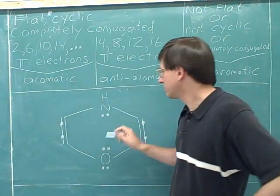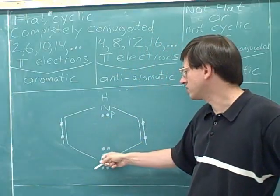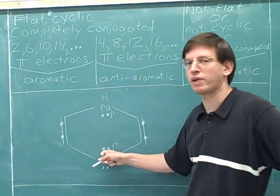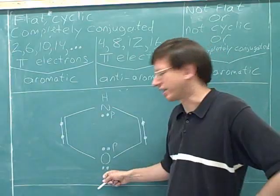The nitrogen will use its p orbital for its lone pair, so these count as pi electrons. The oxygen will use its p orbital for its lone pair, so this counts as pi electrons. But then it doesn't have any p orbitals left, so these can't be pi electrons. They'll have to go in an sp2 orbital.